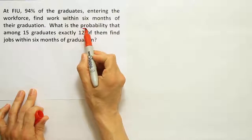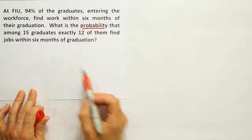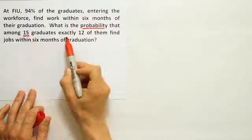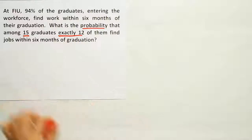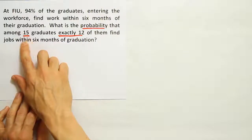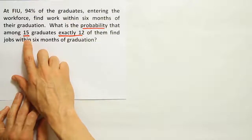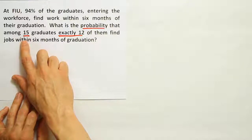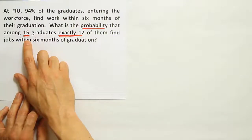So it's a probability question. And it says that among 15, exactly 12 of them find jobs. So there are more than one graduate that's being looked at—it's not one graduate being selected, it's 15 graduates being looked at or selected. So that would indicate that it's perhaps multiplication rule of probability.